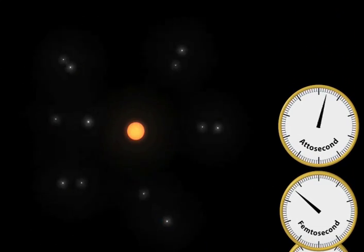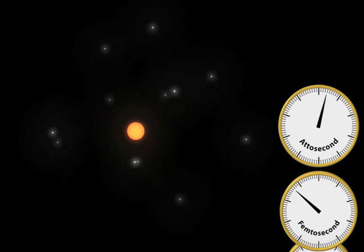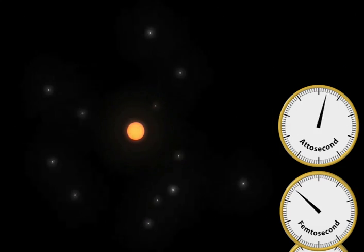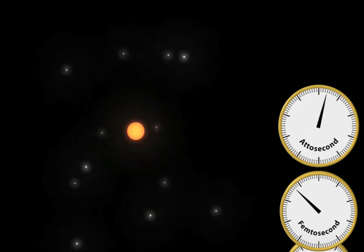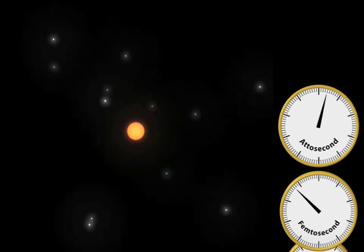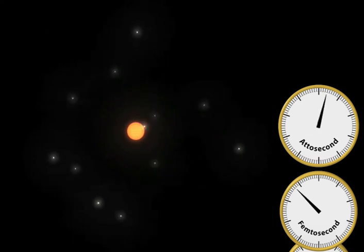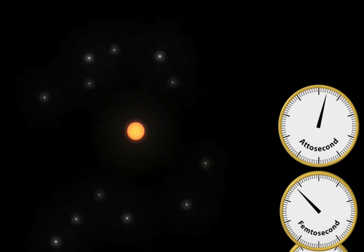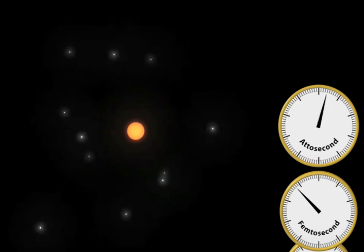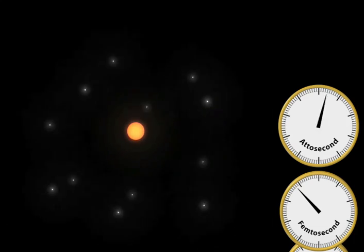Finally, we reach attoseconds, our fastest time step. We've now slowed down one trillion million times. Remember, that's a one with 18 zeros. Electrons are swarming around an atom's nucleus. We're looking at the fundamental building block of everything, including you.